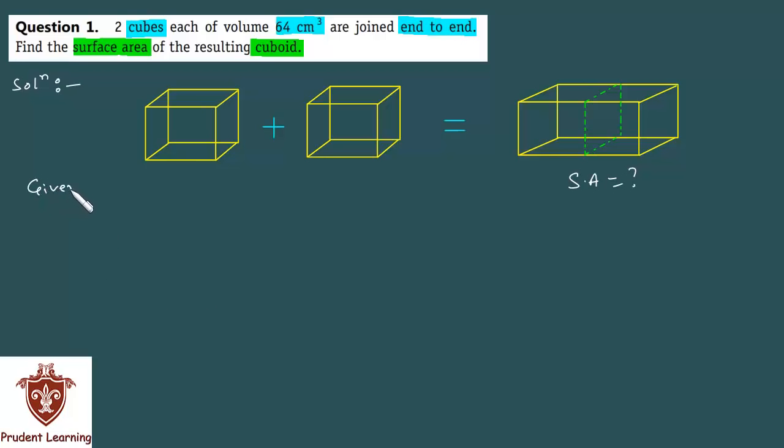Here in the question, we are given volume of each cube is 64 cm³ and we know that volume of a cube is given by L³, where L is the length of the side. That is here we have L³ as 64 which implies that L is cube root of 64, which gives us L as 4 cm.